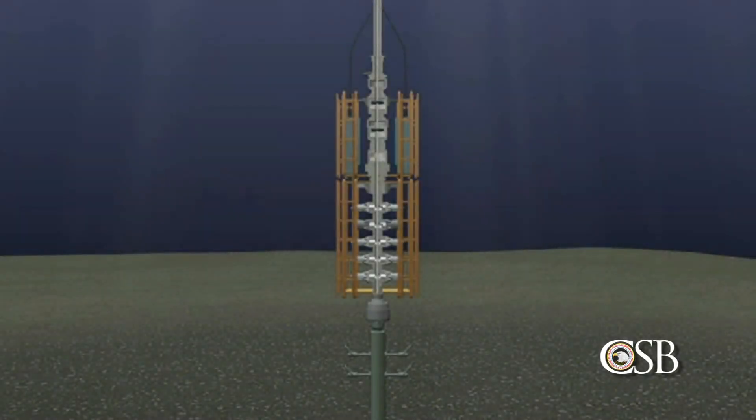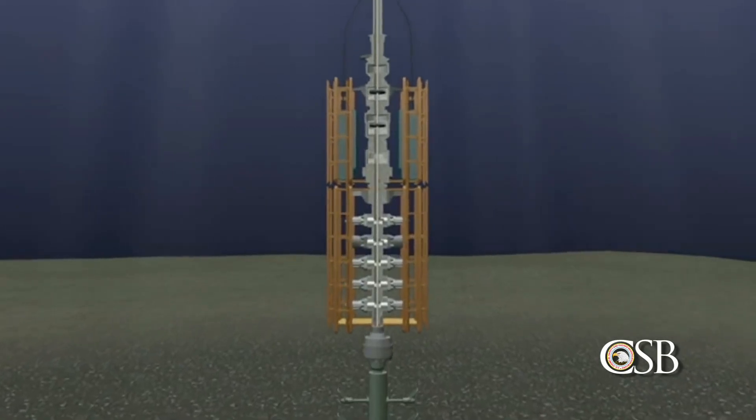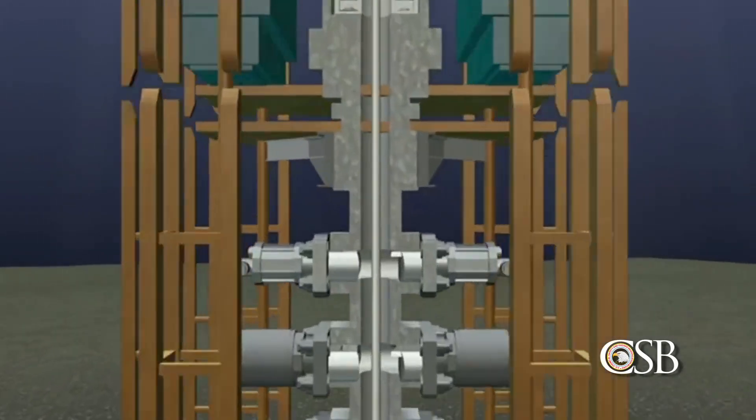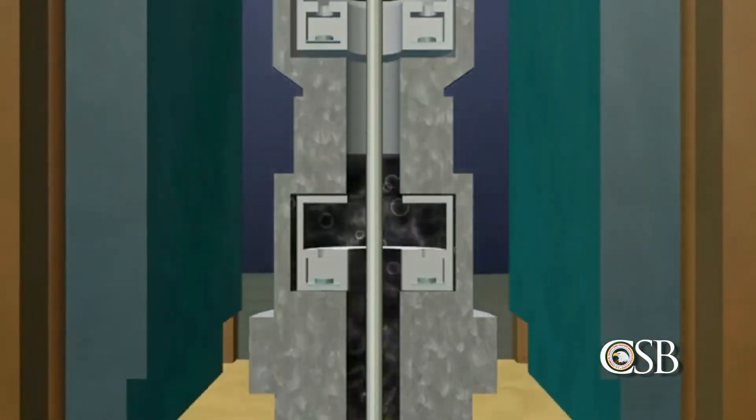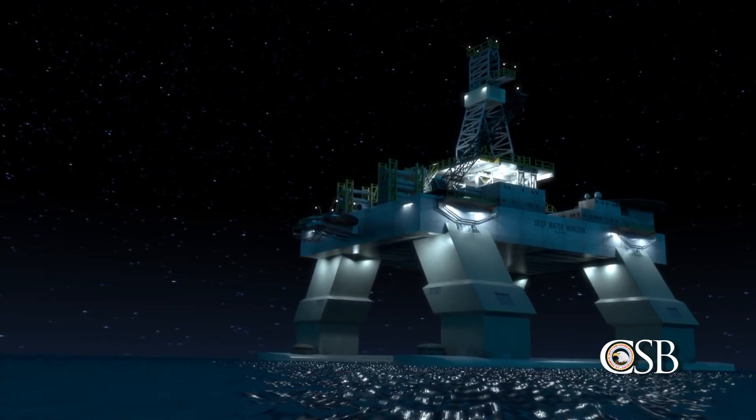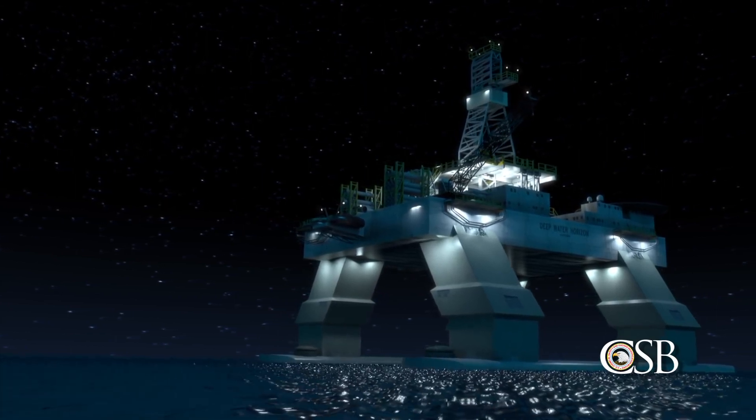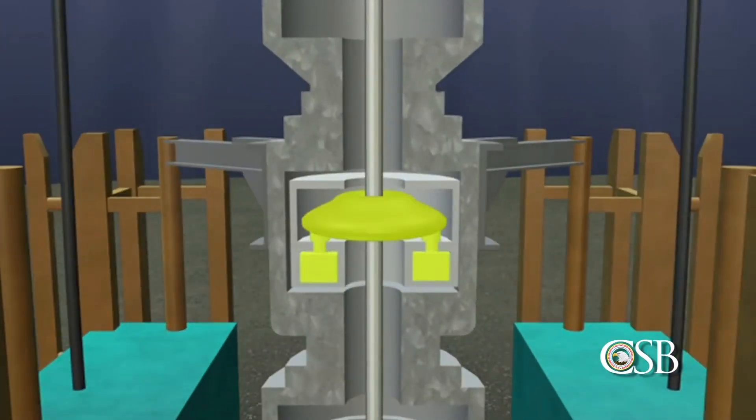At approximately 8:45 PM on April 20, 2010, a kick occurred in the Macondo well. Oil and gas entered the wellbore undetected, eventually passing above the blowout preventer and traveling quickly up the riser toward the Deepwater Horizon and the 126 people on board. Just after 9:40 PM, drilling mud, forced upwards by the rising oil and gas, suddenly blew out onto the rig. Crew members responded by closing the upper annular preventer in the BOP.